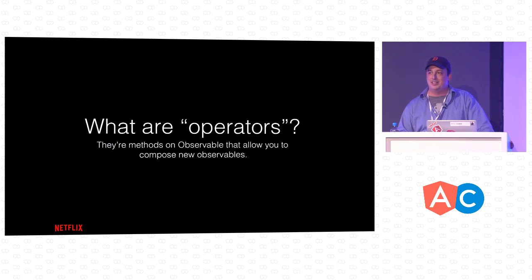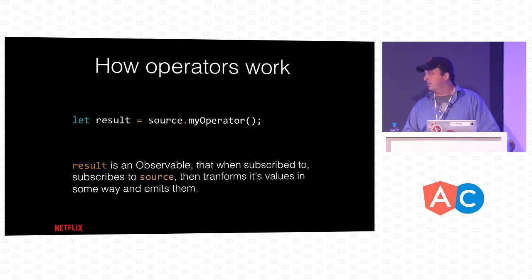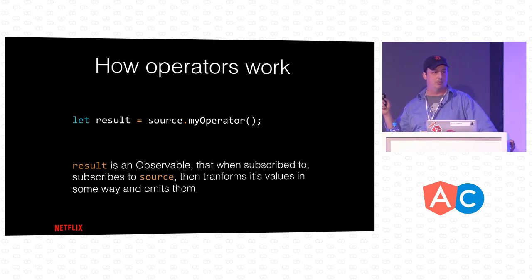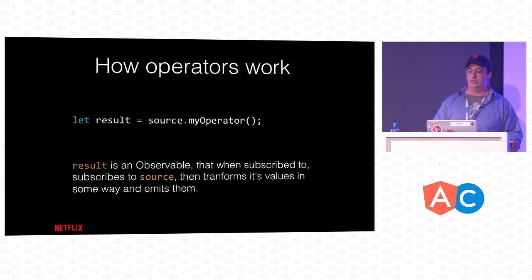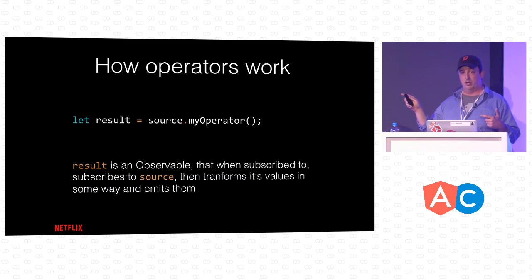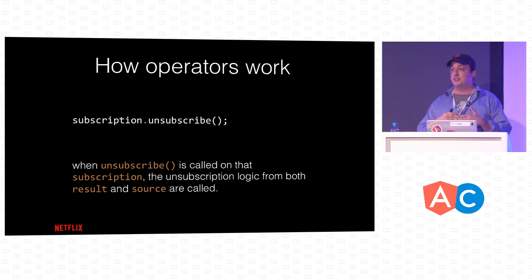Operators are methods on observable that return other observables — they let you compose new observables from existing ones. When you call an operator on a source, it returns a result observable. When you subscribe to result, it actually subscribes to source under the hood, transforms its values somehow — filtering or mapping — and emits those values. If you unsubscribe from the subscription you get back from result, it also unsubscribes from the inner subscription to source. So unsubscriptions are composed through, which enables some powerful patterns.